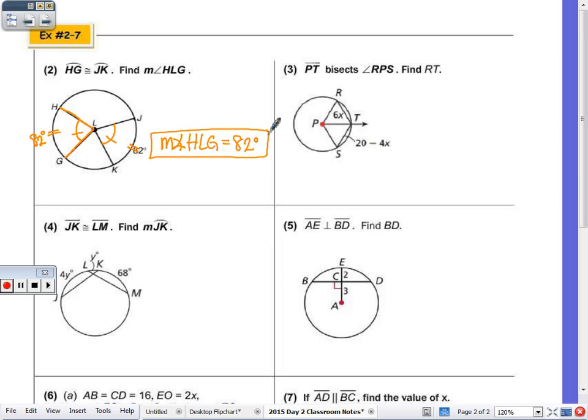Number three, PT bisects angle RPS, find length RT. So PT bisects RPS, so this angle is congruent to that angle. And since those two central angles are congruent, I know that the arcs they intercept are congruent. So I know that RT is congruent to TS. 6X equals 20 minus 4X. Add 4X, we get 10X equals 20. X equals 2. And 6 times 2 is 12. So length RT is equal to 12.